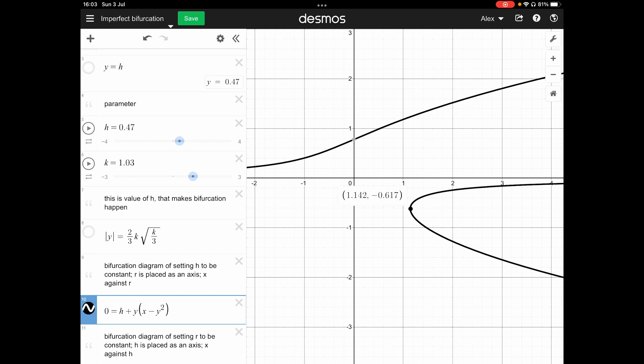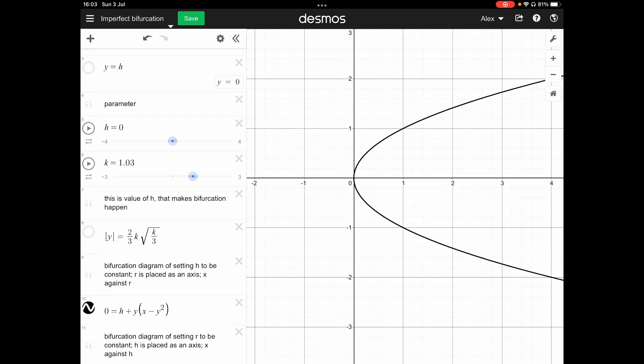As you're having the h increasing, the saddle point goes further and further. As you reach zero, it's exactly where the perfect pitchfork is happening. When you go to negative, it will be another like just upside down version but exactly like just the same thing but just a flipped version.